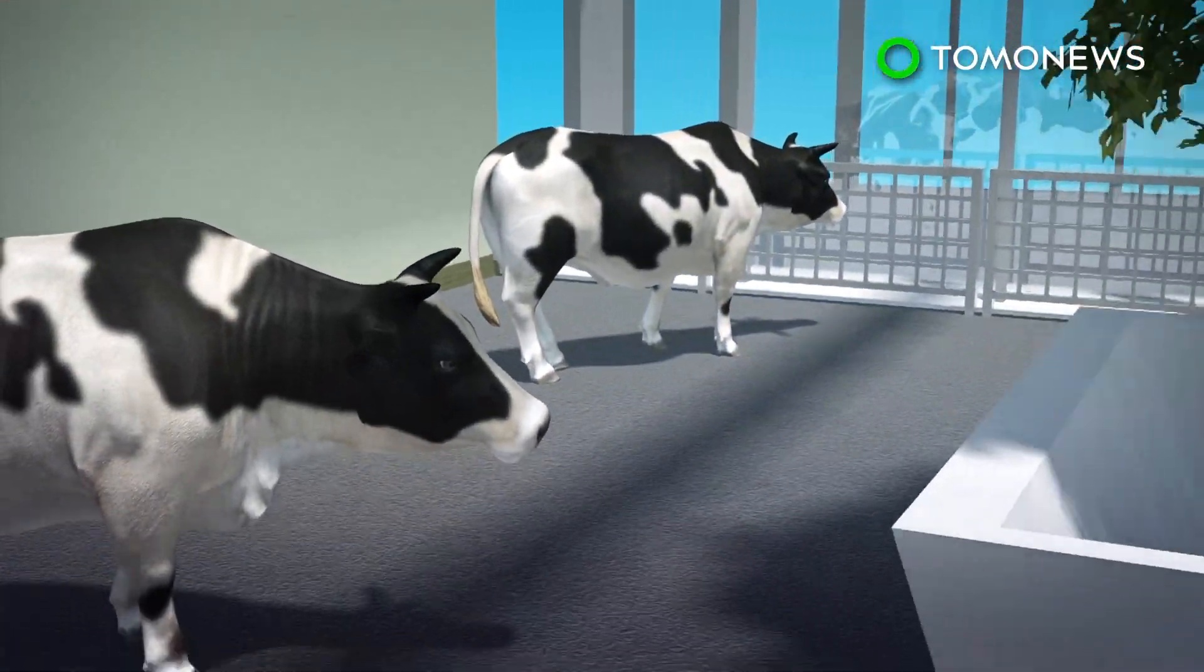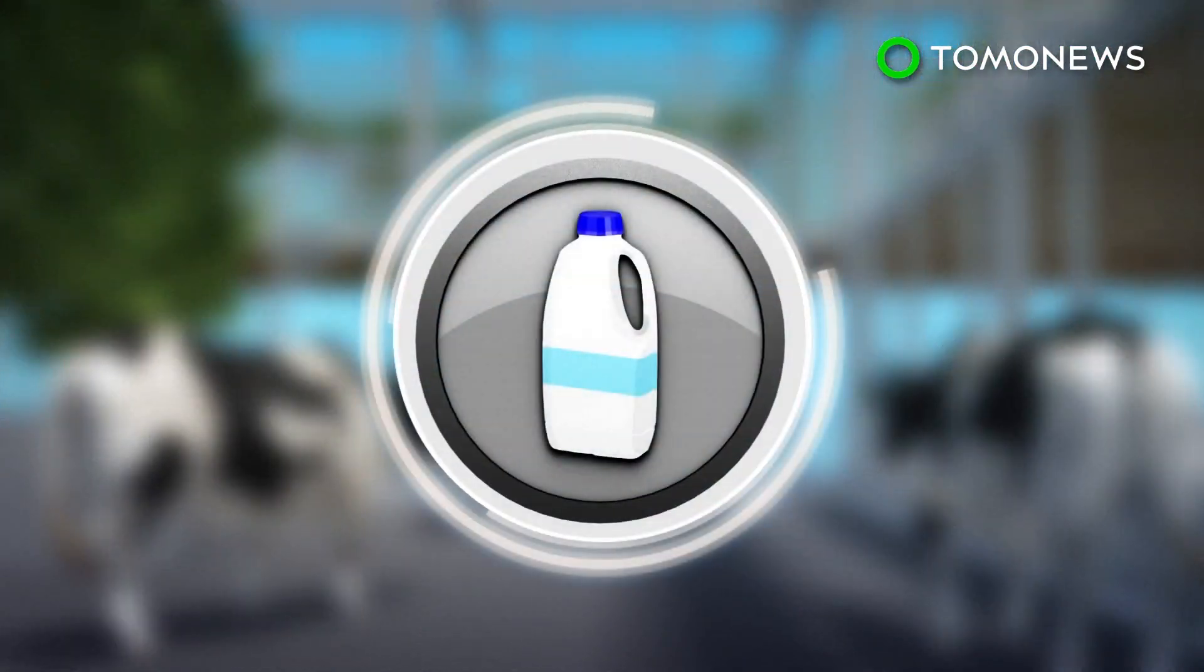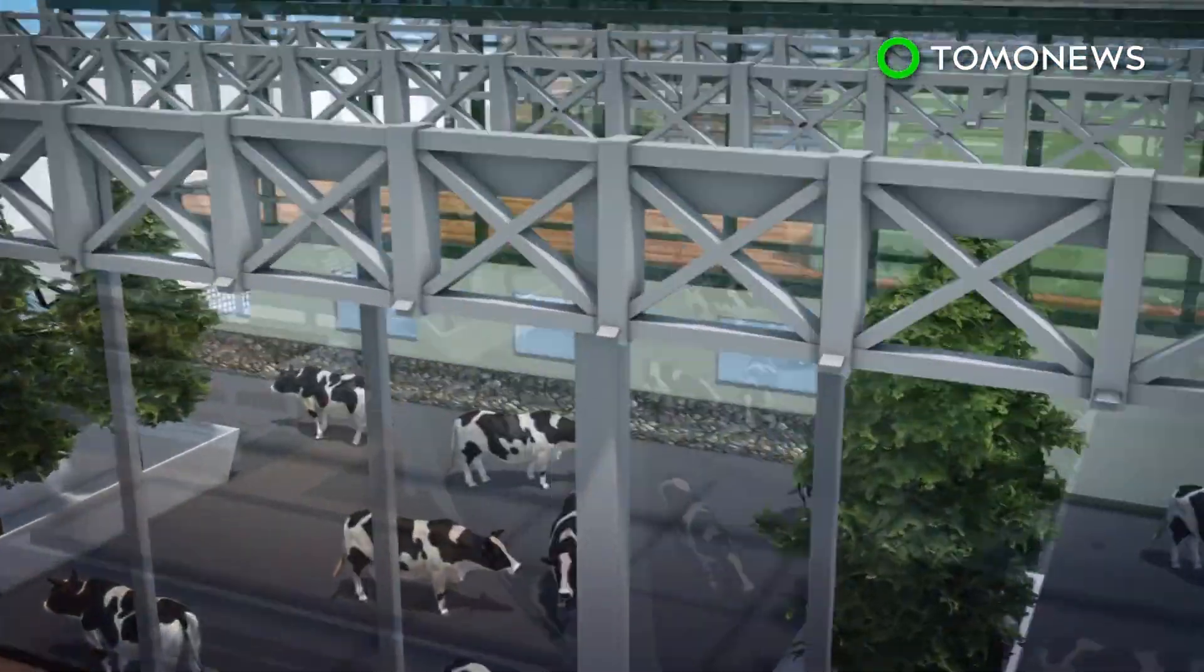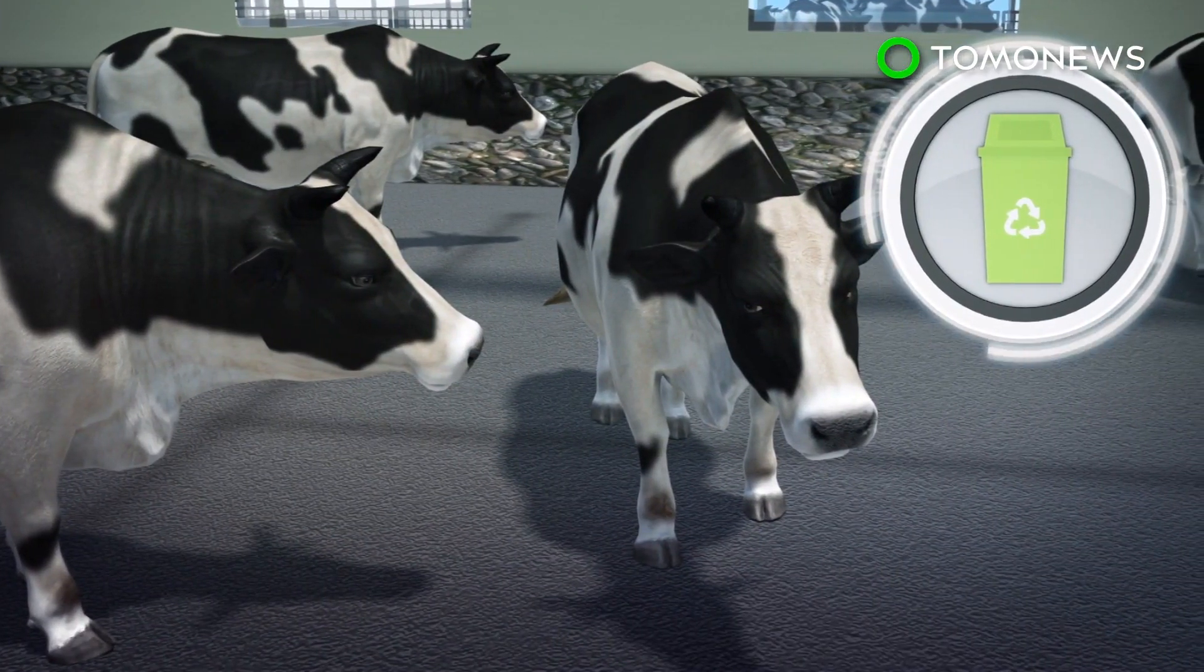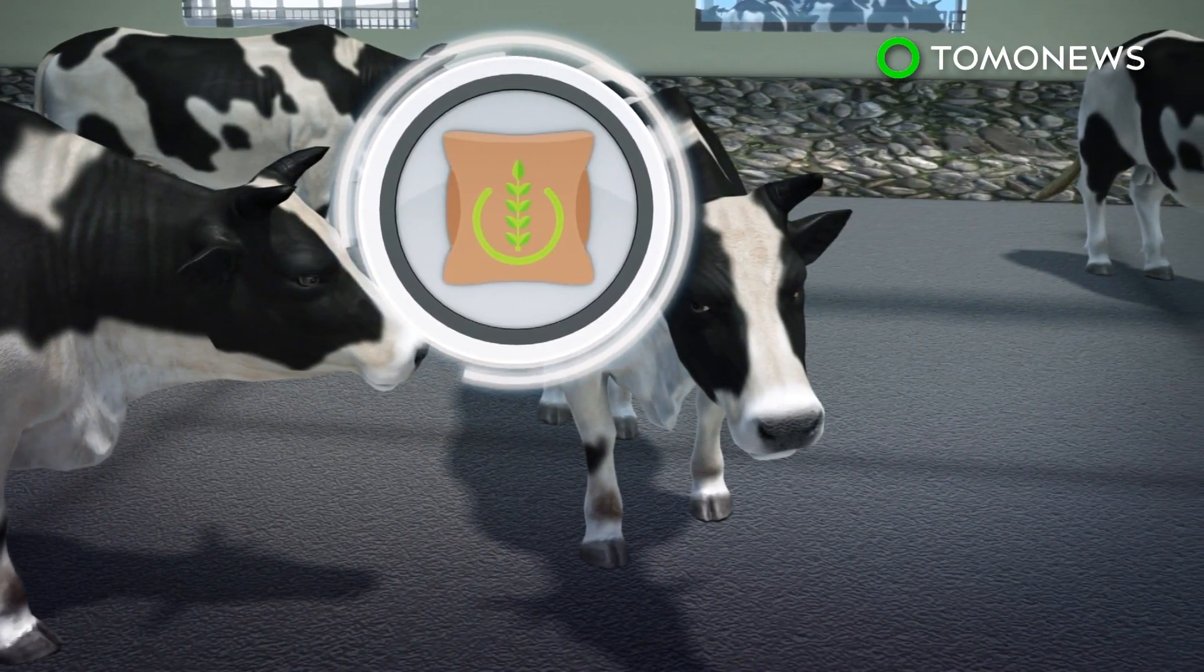The floating dairy will have 40 cows and can produce around 211 gallons of milk daily. According to Mik van Wiengerden, co-leader of the project, who talked with Business Insider, the farm will try to recycle as much as possible. Cows will be fed leftover food waste from the city. The cow's manure will be processed and sold as fertilizer.